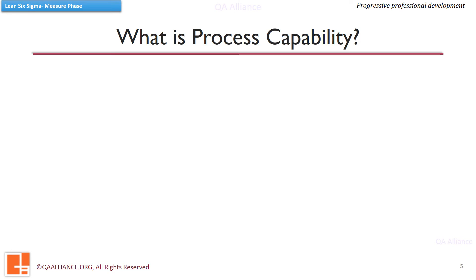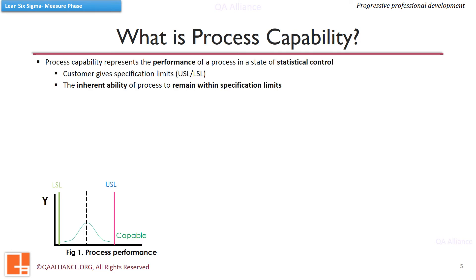As we now know that a capable process is one which is within the specification limits given by the customer. Process capability is the inherent ability of the process to remain within the specification limits. As we saw in previous slide, a capable process is a stable process. Though it is not necessary that a stable process is a capable process. This means a process can be stable, yet it might be off the specification limits.